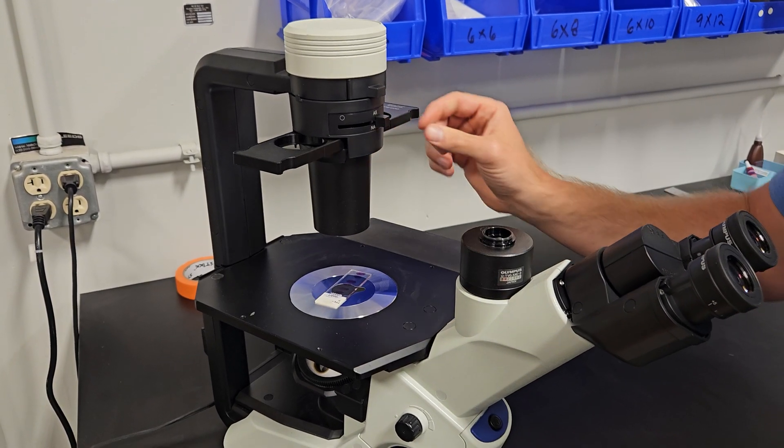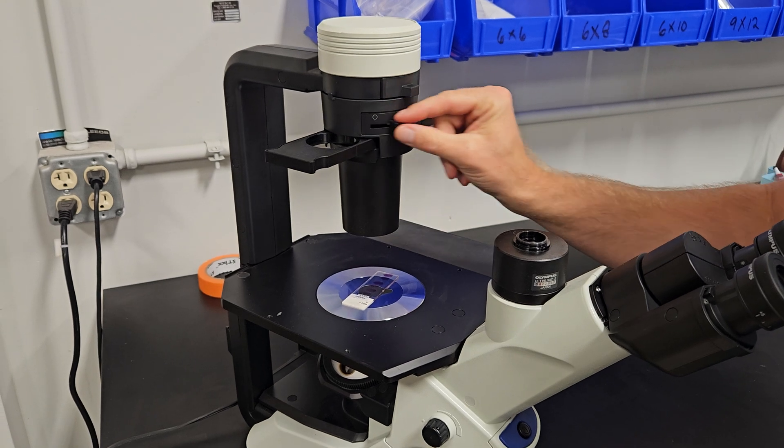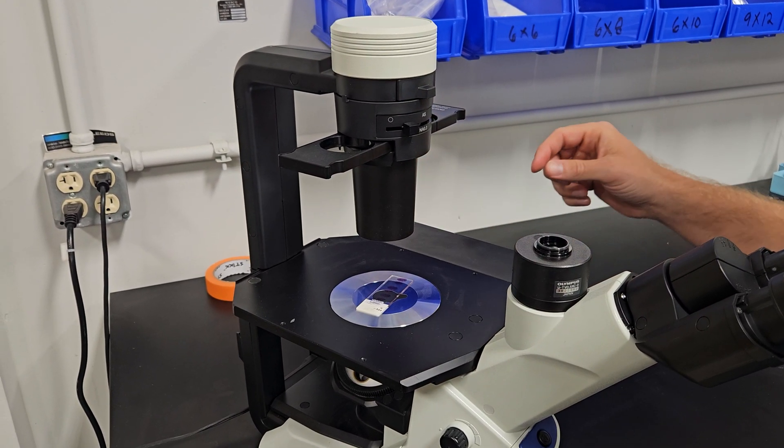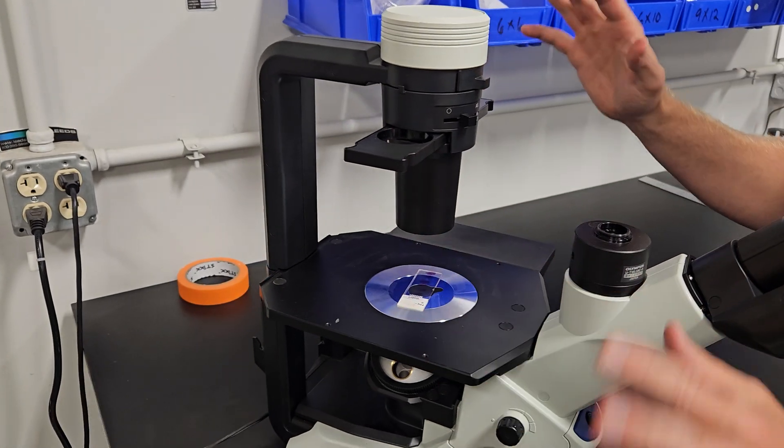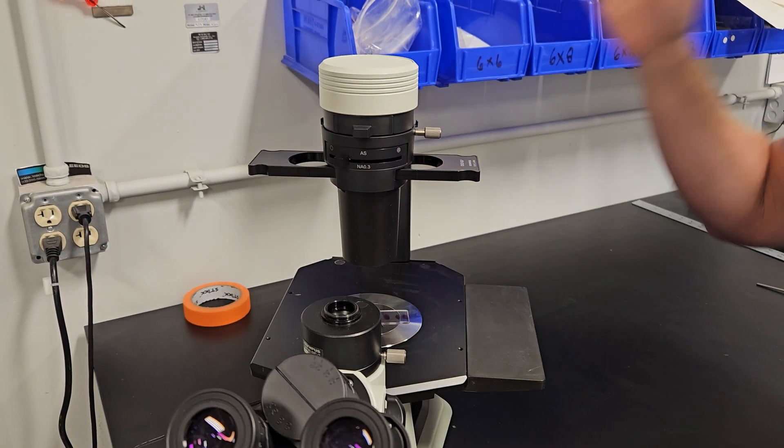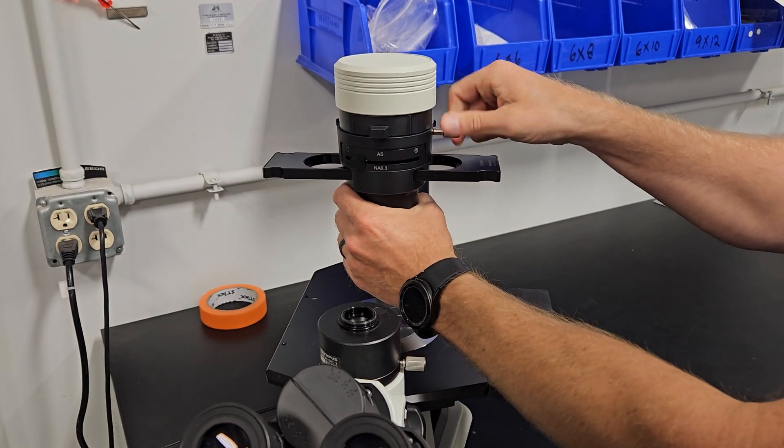So we have the aperture stop, a diaphragm is another word for this, and the condenser. This is something that's kind of tricky. When we ship these scopes, we take this off. So I'm going to move it like this. I'm going to show you how to take it off and put it on this thumb screw here.